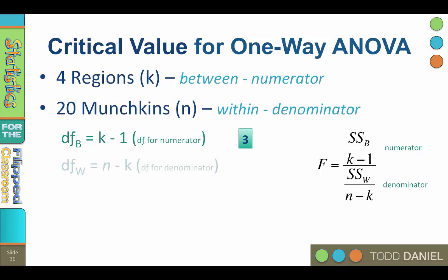The degrees of freedom within equals n minus k. The degrees of freedom within would be the total number of munchkins or participants, which was 20, minus the number of categories 4 or 16.